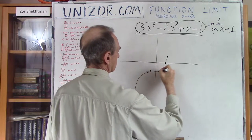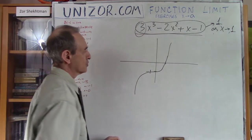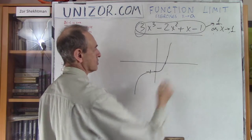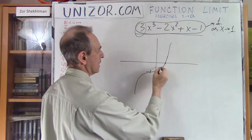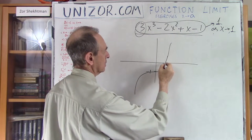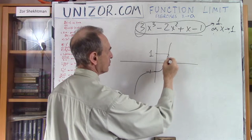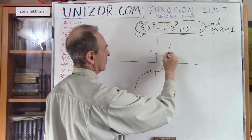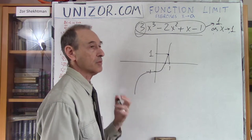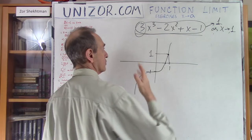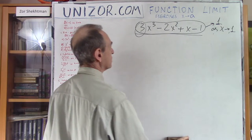At x equal to 0 the function is minus 1, and at x equal to 1 it is 1. It's a cubical parabola, and it's obvious that as x approaches 1, the value of the function approaches 1 as well. That's the simplest kind of limit — you don't really have to think about how to calculate it. Just substitute the limit value of the argument into the function and you will get the limit.